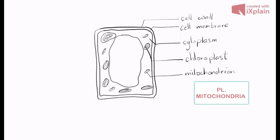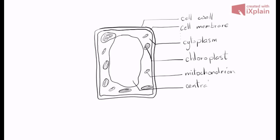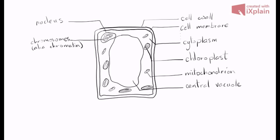We also have our mitochondrion — singular mitochondrion, plural mitochondria. We have this huge central vacuole. We once again have our nucleus, and we have our chromosomes, also known as chromatin. Now let's write our title.